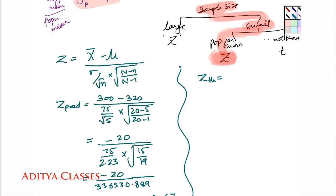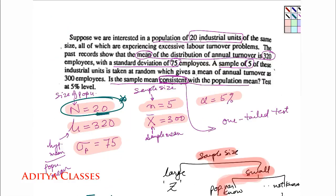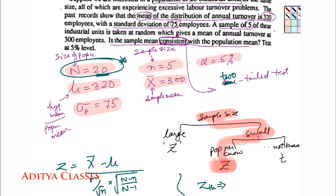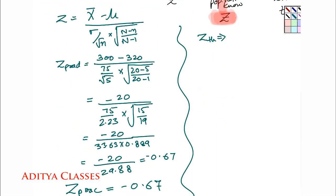Then what about z theoretical? Z theoretical, we saw that it is a one tailed, sorry not one tailed test. It is a two tailed test. Because it is consistent, not less than or more than. So it will be a two tailed test. I believe I said one tailed test. For consistent it will be two tailed.